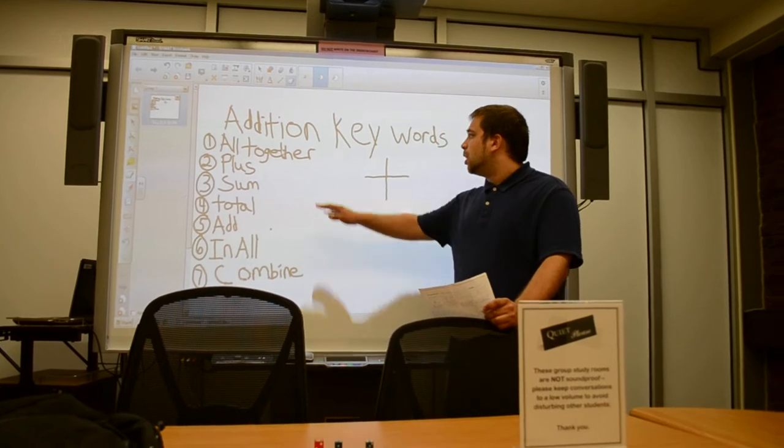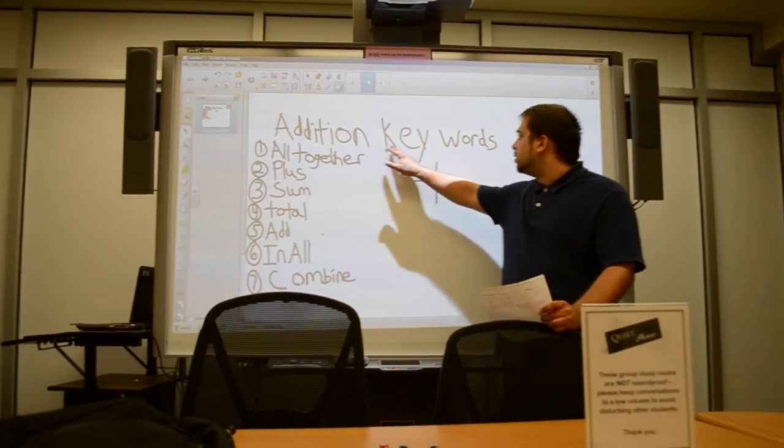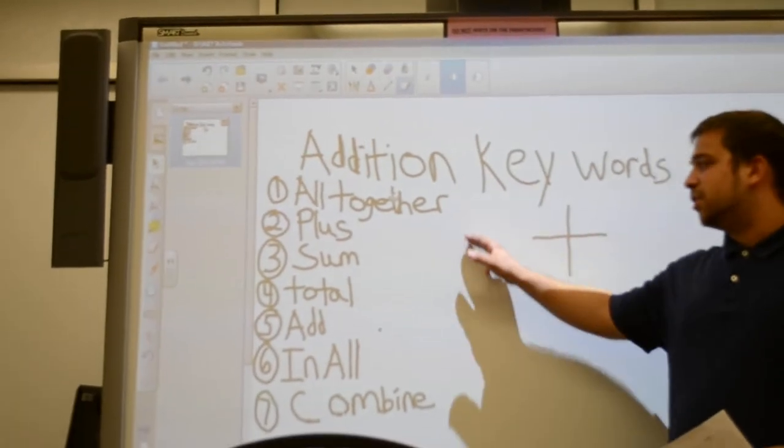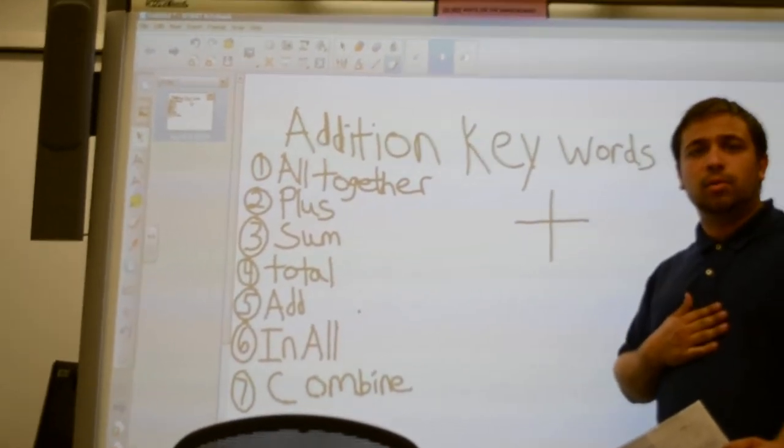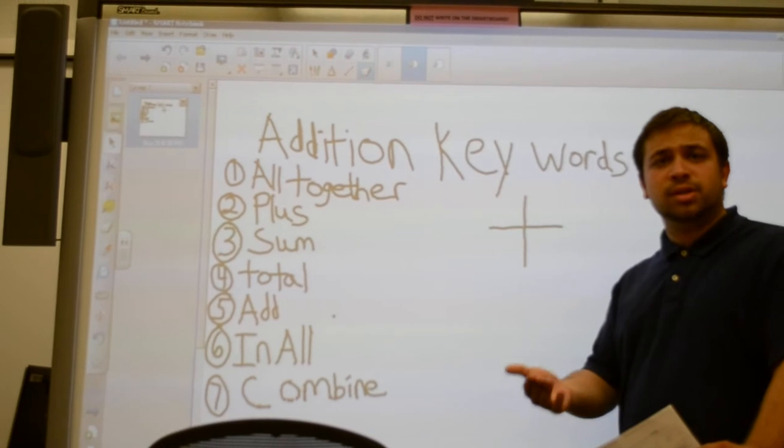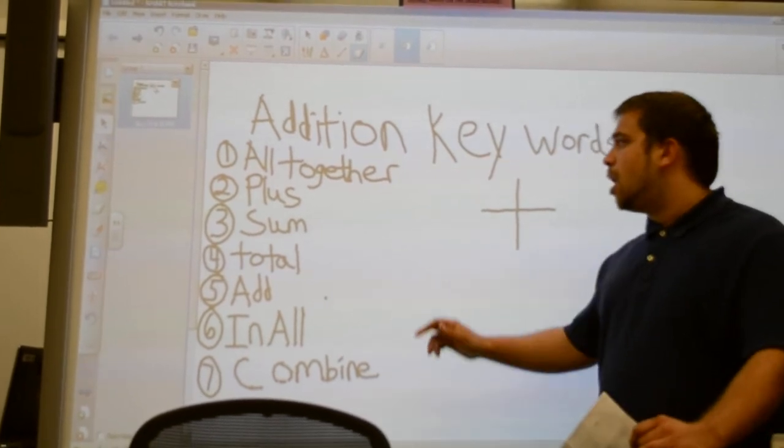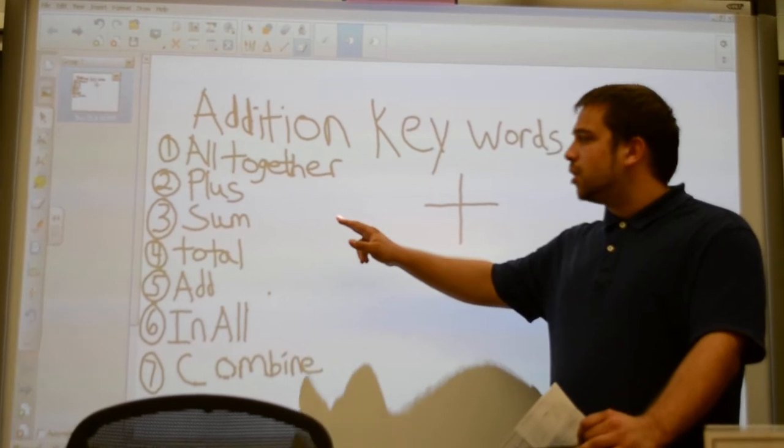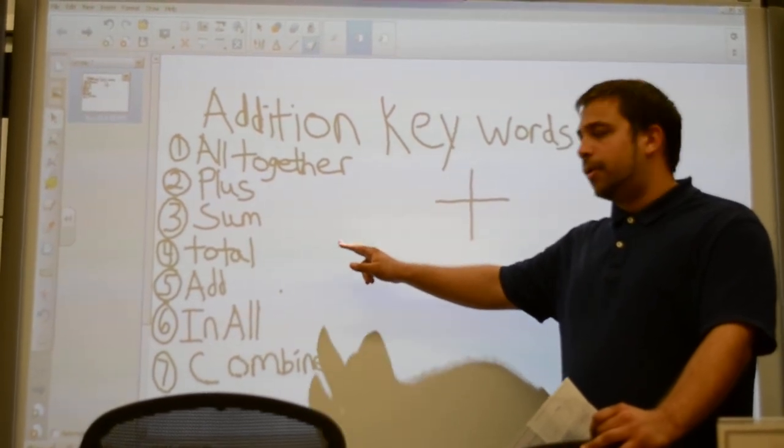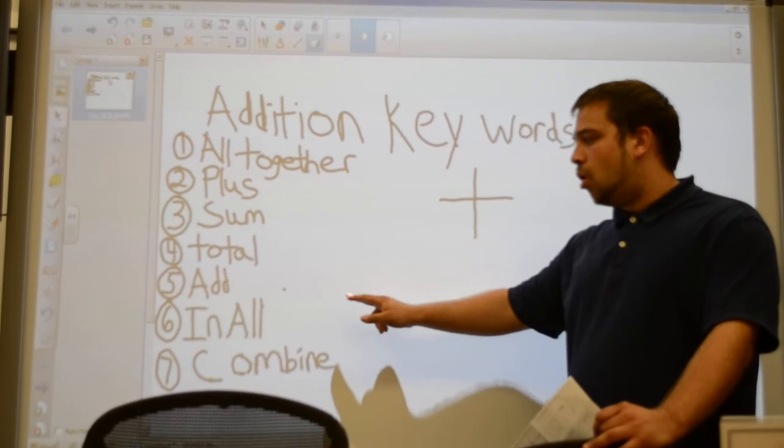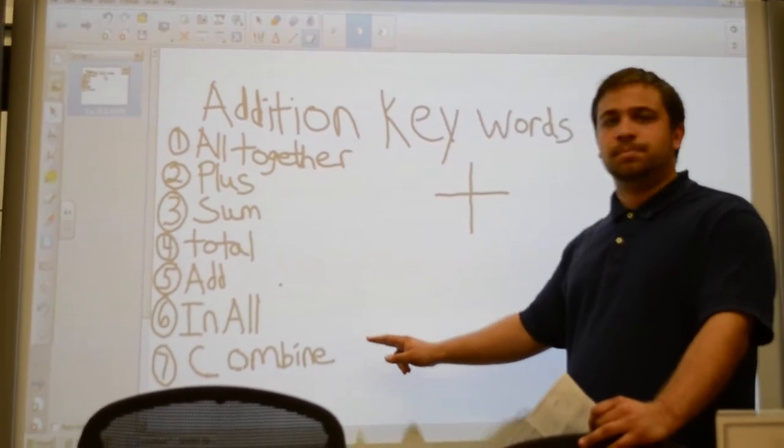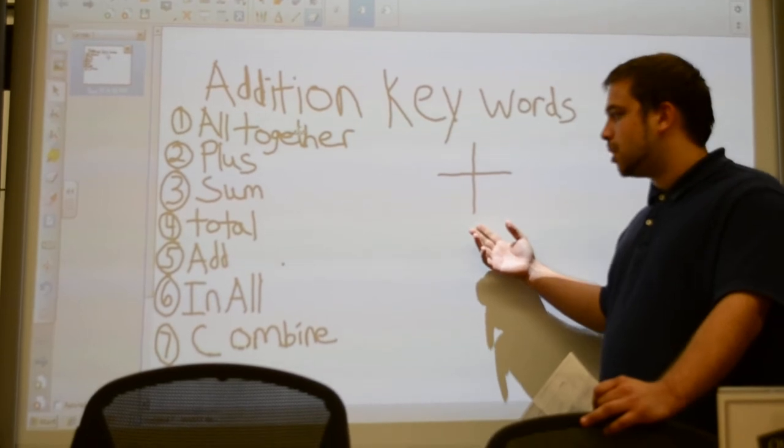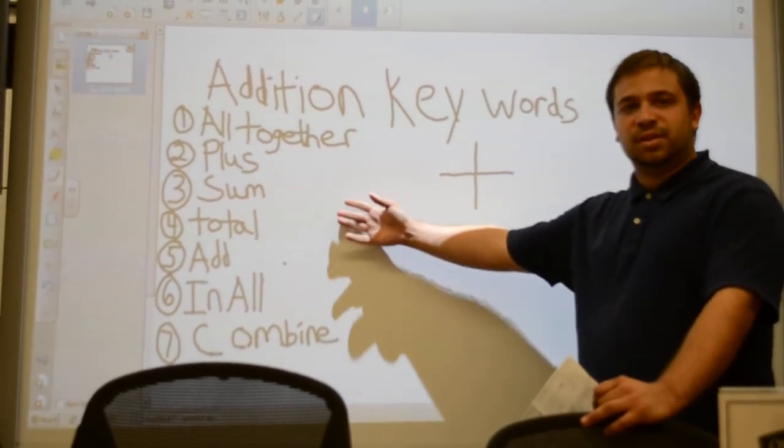So, these are the seven words that I look for to know that I have to use the addition property. I look for altogether, plus, sum, total, add, in all, and combine. This is a plus symbol. This means all of these things.